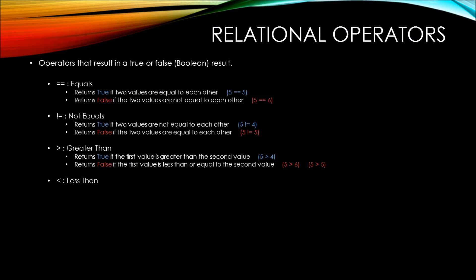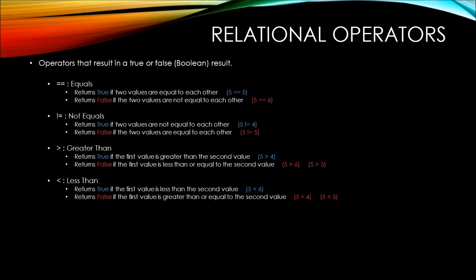The less than relational operator is the opposite of the greater than operator. It returns true if the first value is less than the second value — so 5 less than 6 returns true. However, the less than relational operator would return false if the first value is greater than or equal to the second value.